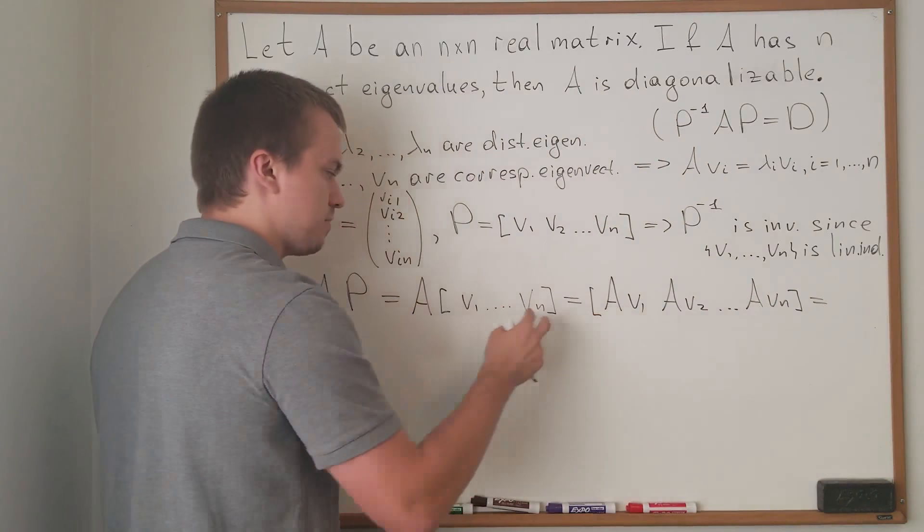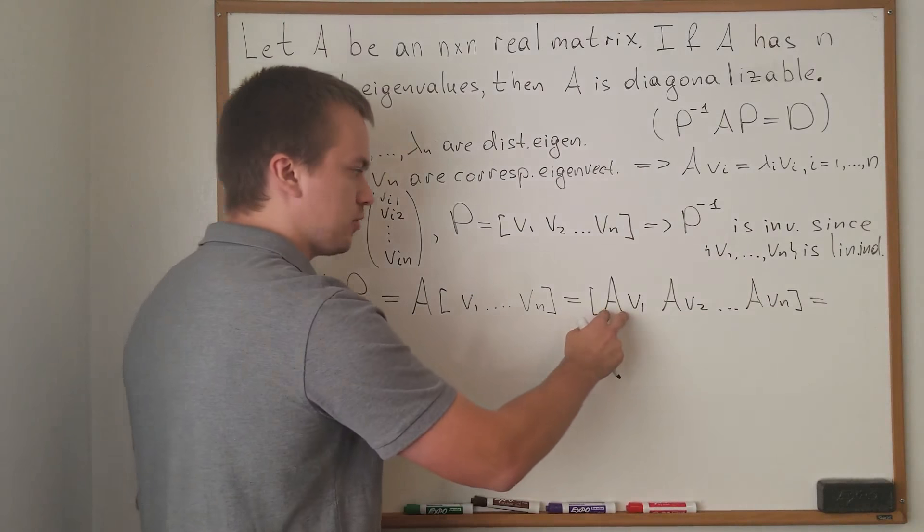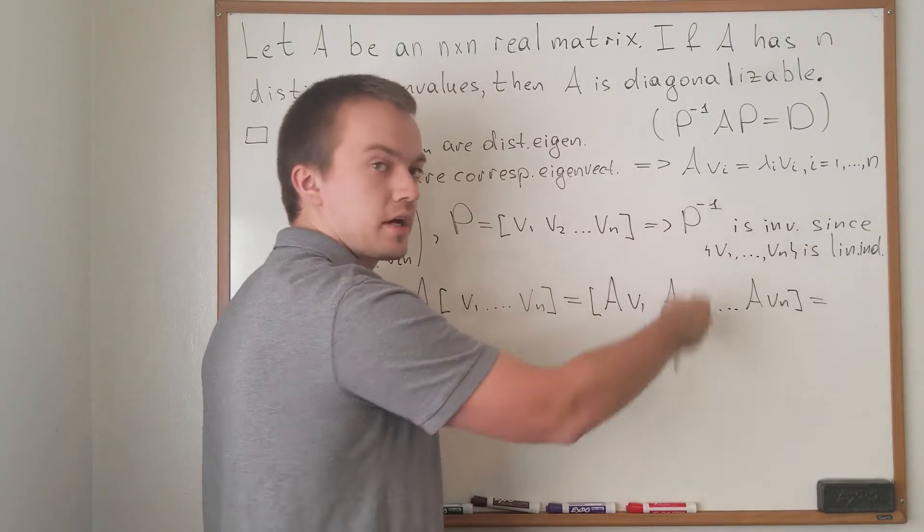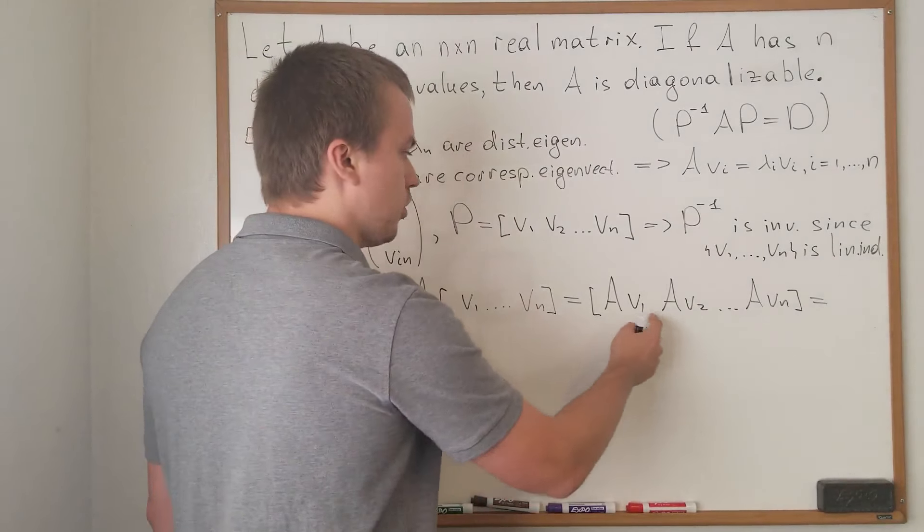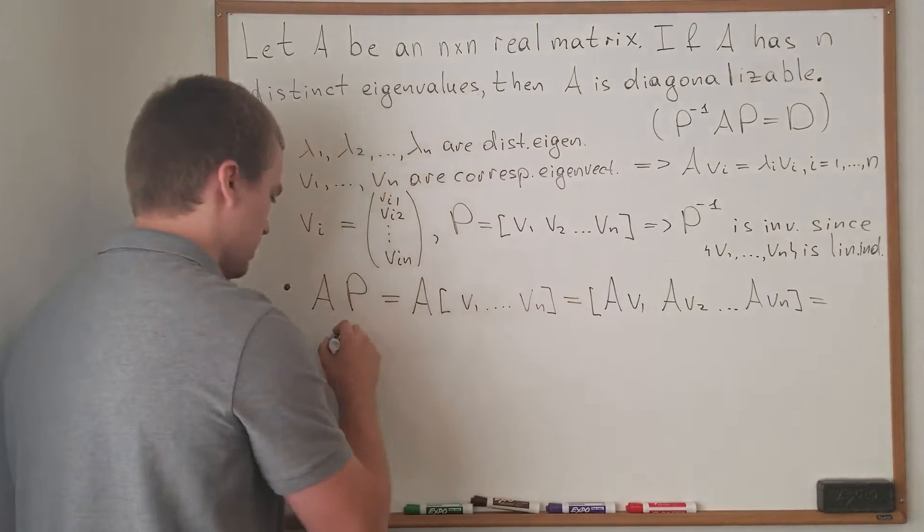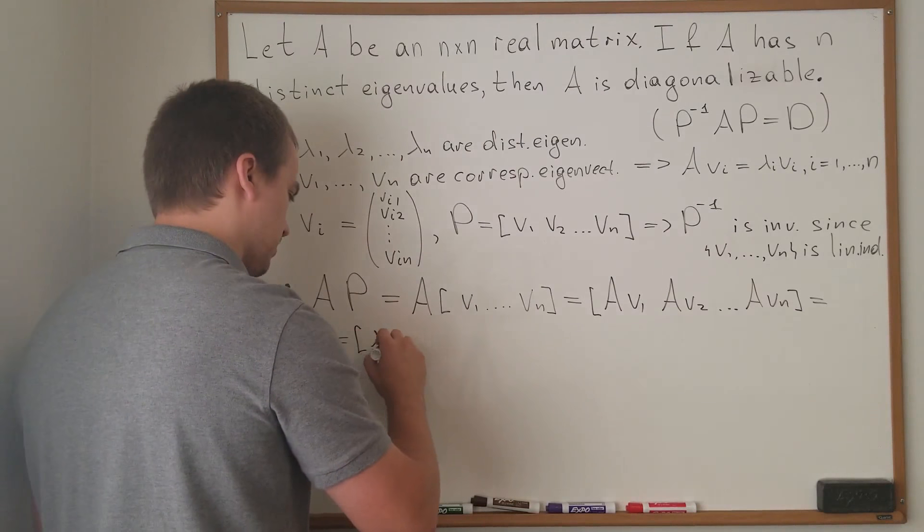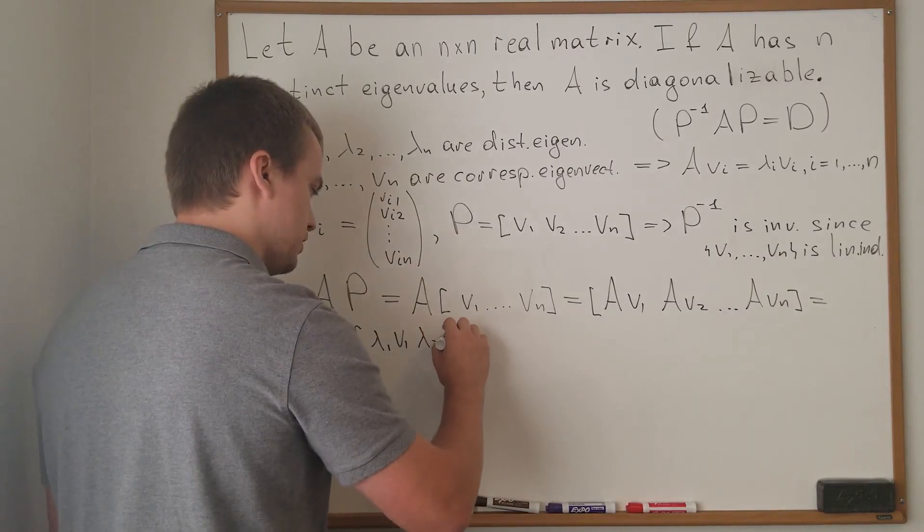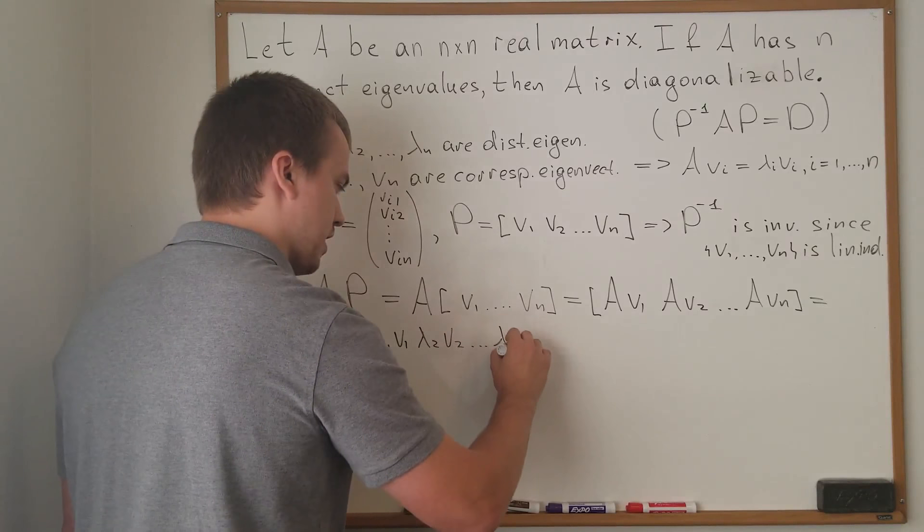Why is this true? Because basically what I'm saying is: let's multiply the whole matrix by the first column, the whole matrix by the second column. But what do we know about all the Vis? We know that they are eigenvectors. So I can write this as lambda one V1, lambda two V2, and lambda n Vn.